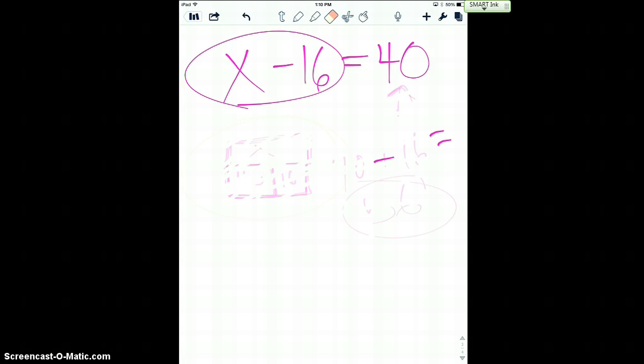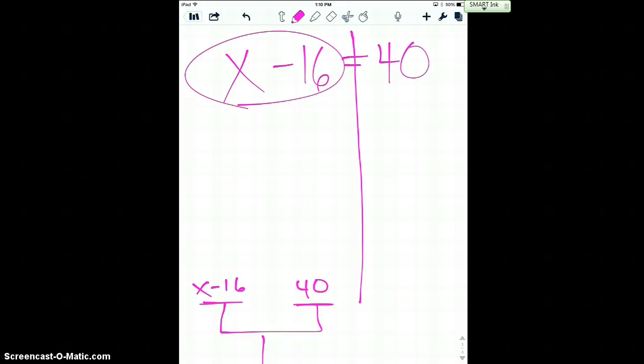Then I wanted to cover with you the second method, which is the algebraic method. So that, I'm gonna draw my scale. On one side of the scale, thinking about it, is x minus 16. On the other side is 40. And right now they are balanced. Okay, they are balanced to each other. So if I do something to one side, I'm gonna have to do it to the other.